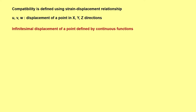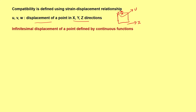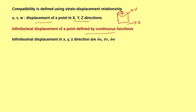u, v, w are the displacements of a point in the x, y, z directions. If I have a body and I discuss about a point, that point may undergo a microscopic displacement — if this is in the x direction, then this corresponds to u. The infinitesimal displacement of a point is defined by some continuous functions, and infinitesimal displacements in x, y, z directions are given by δu, δv, and δw.